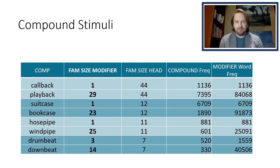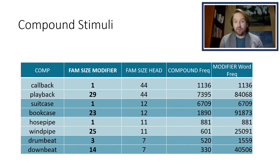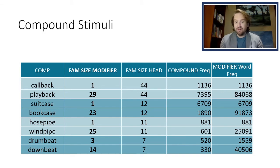We wanted to maximize the difference in modifier family size within our pair. Between callback and playback, callback has a modifier family size of one — call only appears in one English compound — whereas play in playback appears in 29 compounds as a modifier in total.